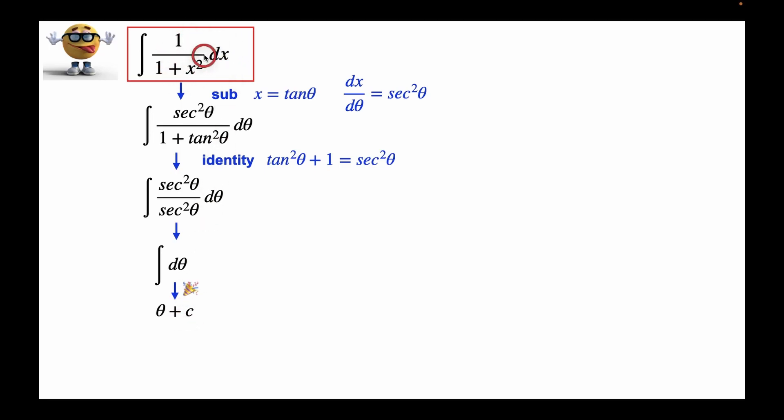Now we want things in terms of x, not theta, so we're going to substitute back. So if x equals tan theta, then to solve for theta, we've got to take the inverse, so theta equals the inverse tan. So we substitute that in, and this, my friends, is our integral in all its glory.